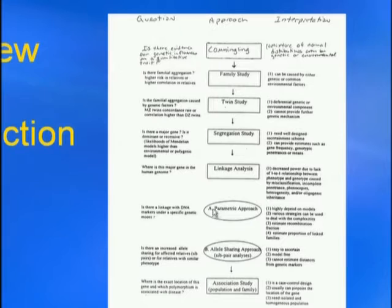I've outlined two different types of linkage analyses we'll focus on: parametric approaches, which are the traditional LOD score linkage analysis using extended kindreds — some of you have probably encountered LOD scores in the literature — and also the allele sharing approaches, which is the sib-pair linkage analysis.